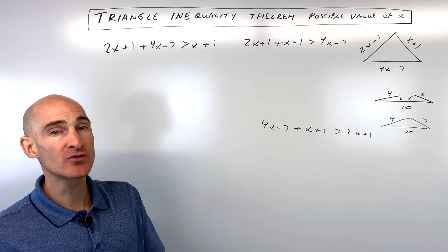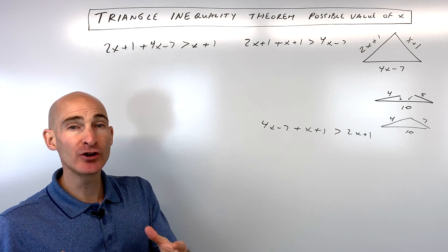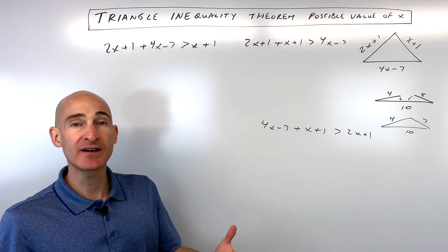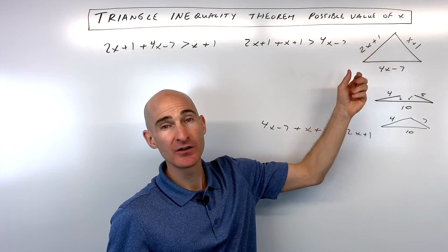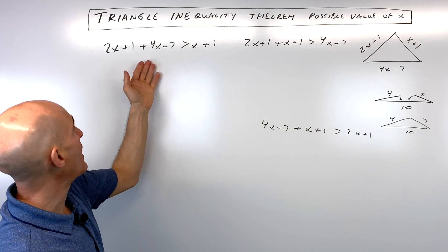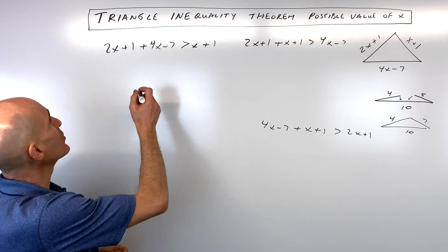Okay, so what we're going to do is we're going to solve these three inequalities separately and then we're going to take a look at the solutions on the number line to find out what the possible values of x are in order to make this a true triangle, so a possible triangle that you can draw. So let's go ahead and solve this.